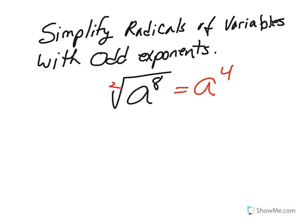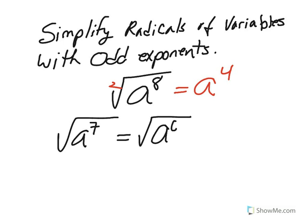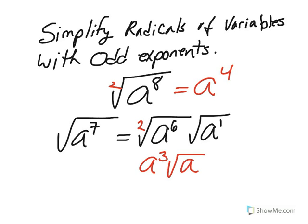In order to do odd exponents, such as the square root of a to the seventh, we need to change that using the multiplication property of square roots into the square root of a to the sixth and the square root of a to the first. In other words, we're making it an even power and one odd power, the odd power always being to the first. Then we take the index and divide the 2 into the sixth, and get a to the third. The square root of a cannot be reduced, so we have a cubed times root a.